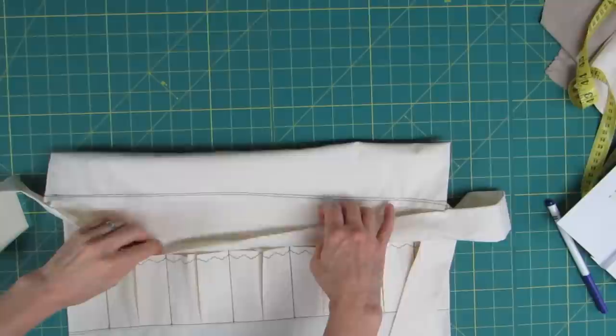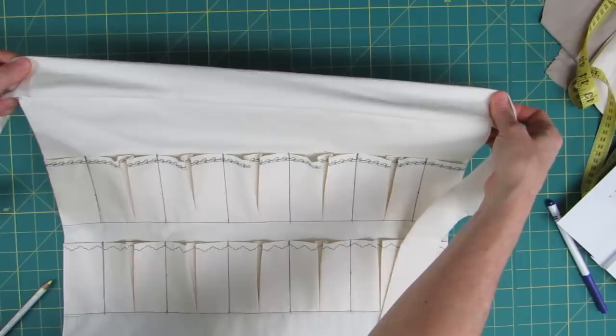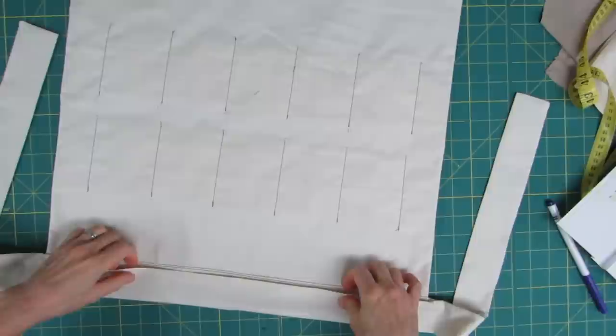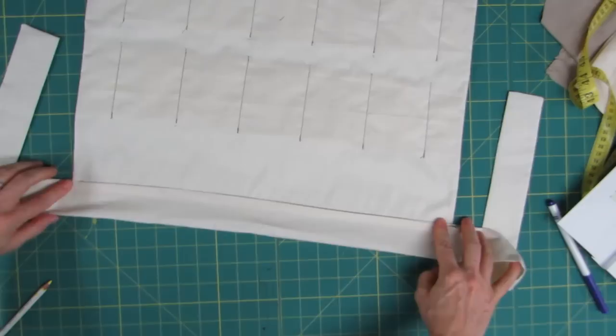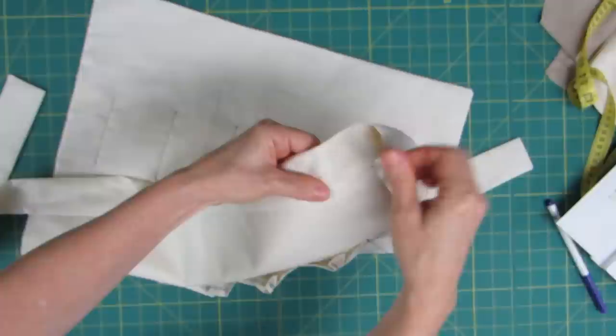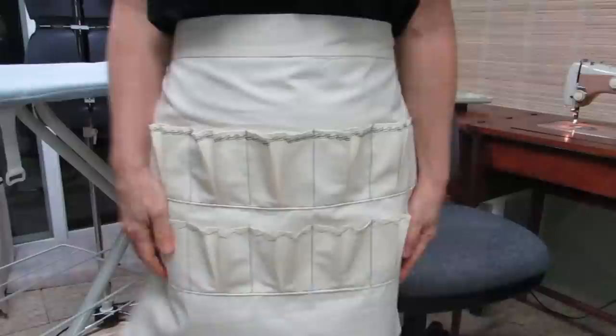Now that that apron tie is sewn to the body there in the front, all you have to do is press under the seam allowance on the other side of the tie and then fold it to the inside like that. So you see it's nice and finished on the outside. And then here on the inside, you can just do a hand stitch to stitch that down in the back, or if you're brave, you can stitch in the ditch on the front and catch that. Whichever method you're the most comfortable with.